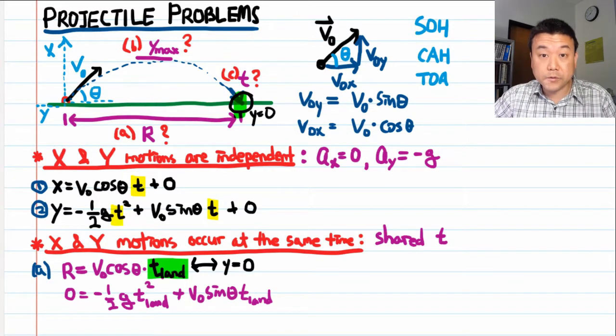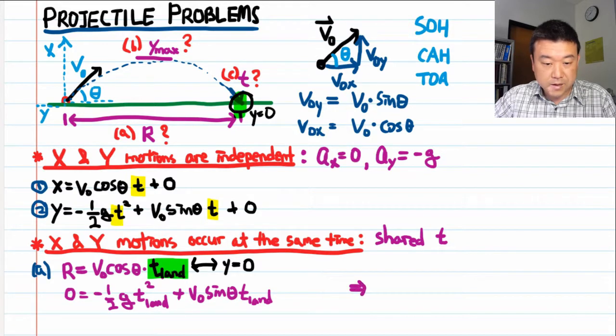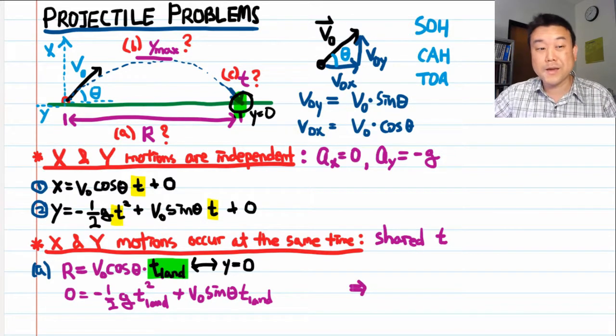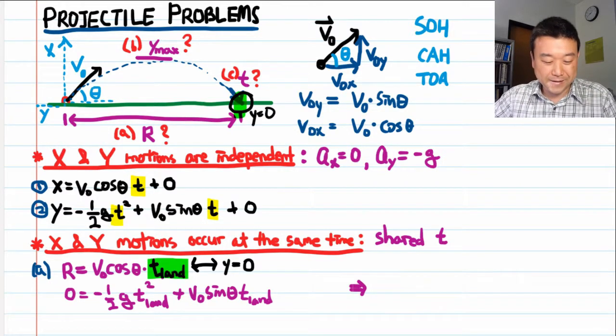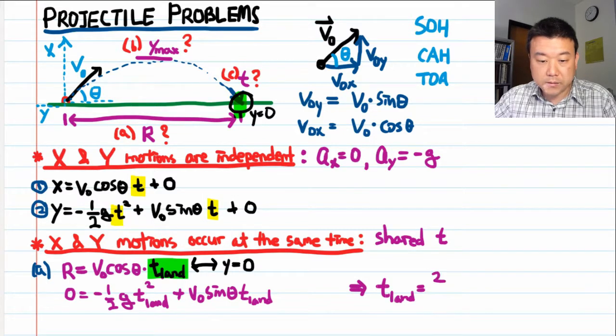So looking at the second equation, it's pretty simple. Solving it for t land. By the way, one factor of t land cancels out. It's because one of the times when y is equal to zero is t is equal to zero at the very beginning. So solving for t land, you get this. 2V naught sine theta over g.